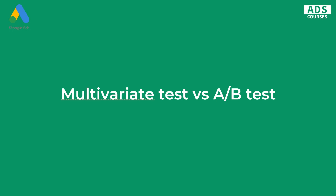In A/B testing you should test only one element, because if you make multiple changes in one variation — for example changing the button, the call-to-action text, the headline, and the main picture — you won't know which change actually impacted performance. That's why in A/B testing you should always test one element or one section.